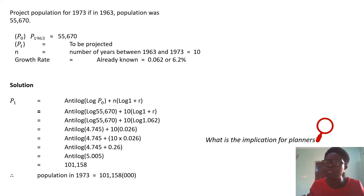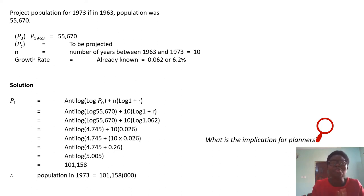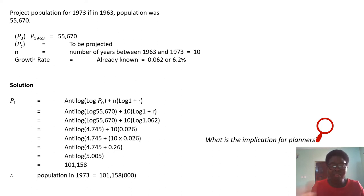What is the implication for planners? You will discover that the growth rate is high and the population is increasing. When you have increasing population, it means you're going to have more students enrolled in school across different levels, which implies that you need to plan for the age groups at each school level. If this is not done, it will affect the general economic situation. Walk through this and practice more.